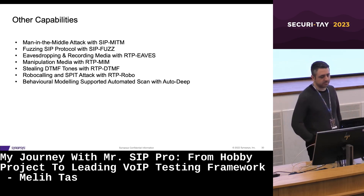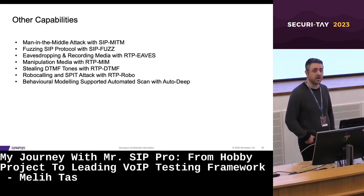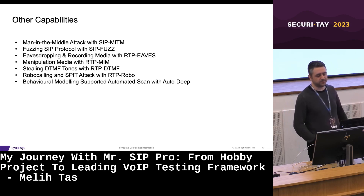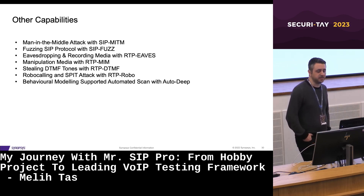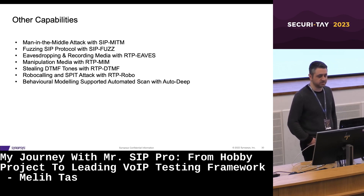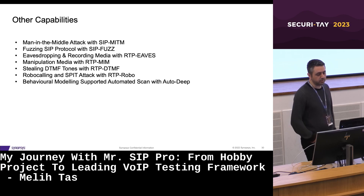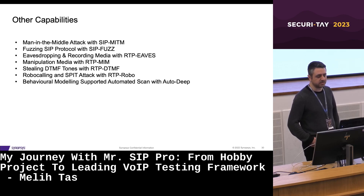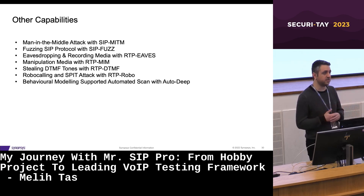There are additional modules that provide further capabilities. SIP Man-in-the-Middle enables SIP man-in-the-middle attacks using ARP spoofing. SIP Fuzz generates irregular SIP messages to test zero-day vulnerabilities. RTP EVUS and RTP MIM allow for eavesdropping and media manipulation. RTP Media and RTP-DTMF record and decode DTMF tones in real-time. RTP-ROBO can be used for robocalling and spam attacks. Auto-DIP is an automatic scanner that uses behavior modeling to perform security audits. These modules are still under development or in the testing phase.